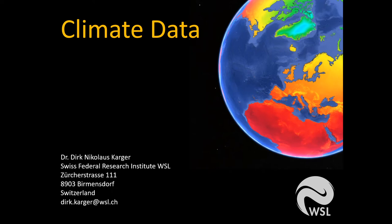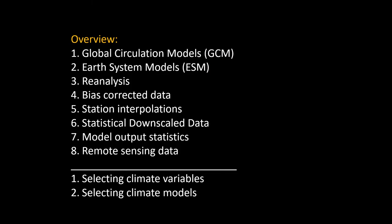Hi everybody, my name is Dirk Kager and I'm currently a research scientist at the Swiss Federal Research Institute WSL in Switzerland. Today I want to give you a short overview about climate data — what kind of climate data is available out there. I would like to start with a short introduction to global circulation models or GCMs, to Earth system models, to reanalysis data, bias corrected data, station interpolations and statistically downscaled data, which is something most people are more or less commonly familiar with.